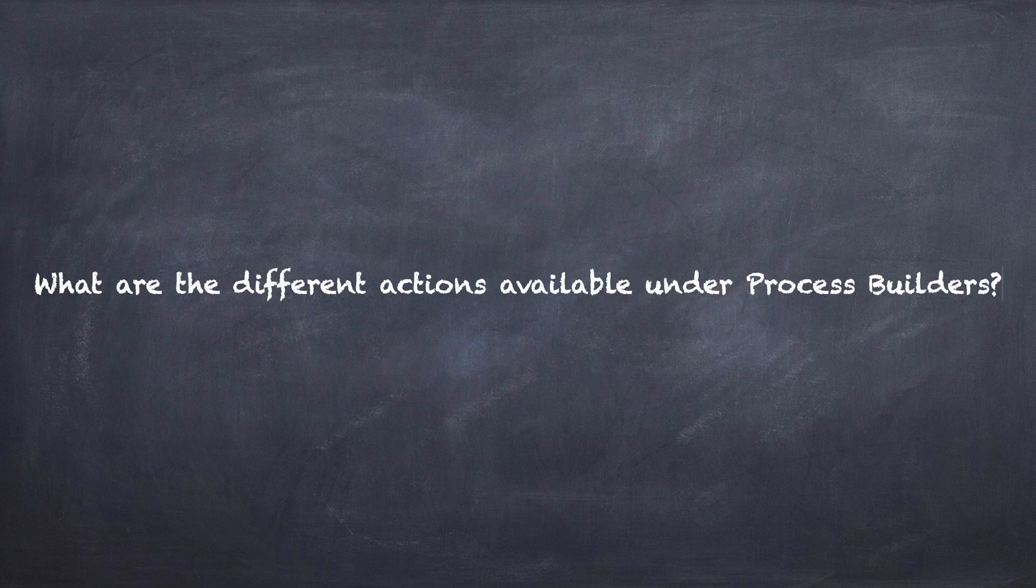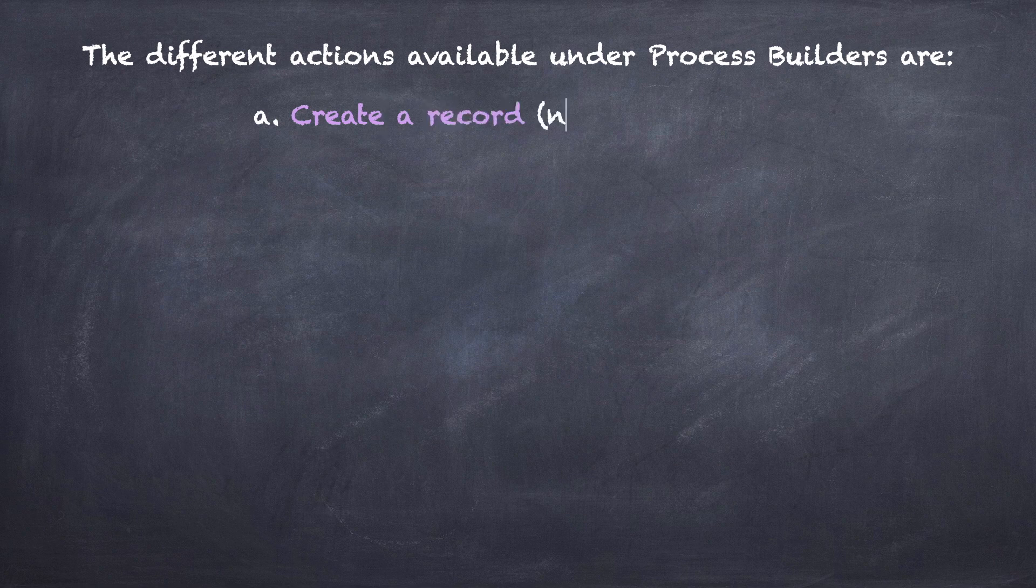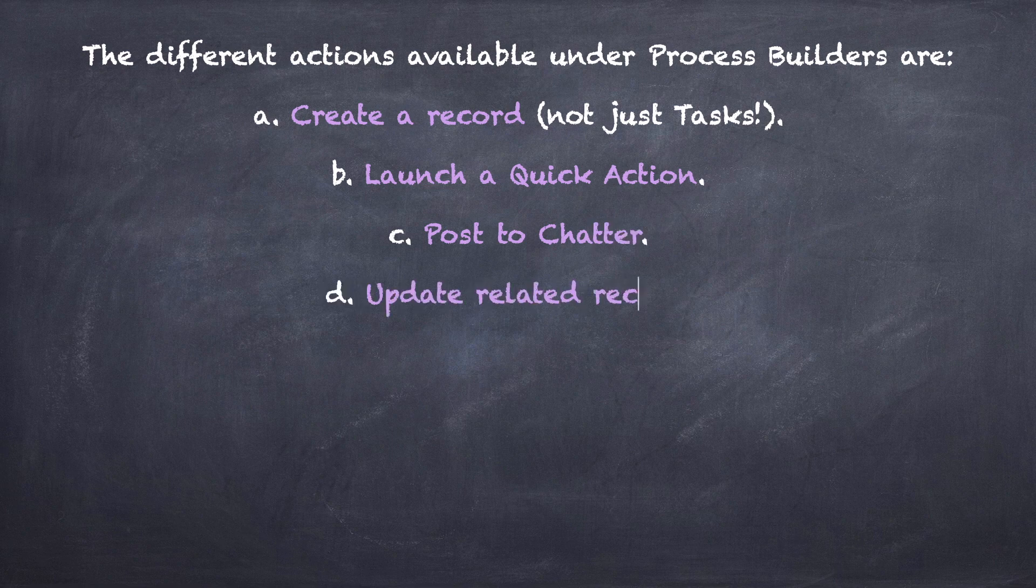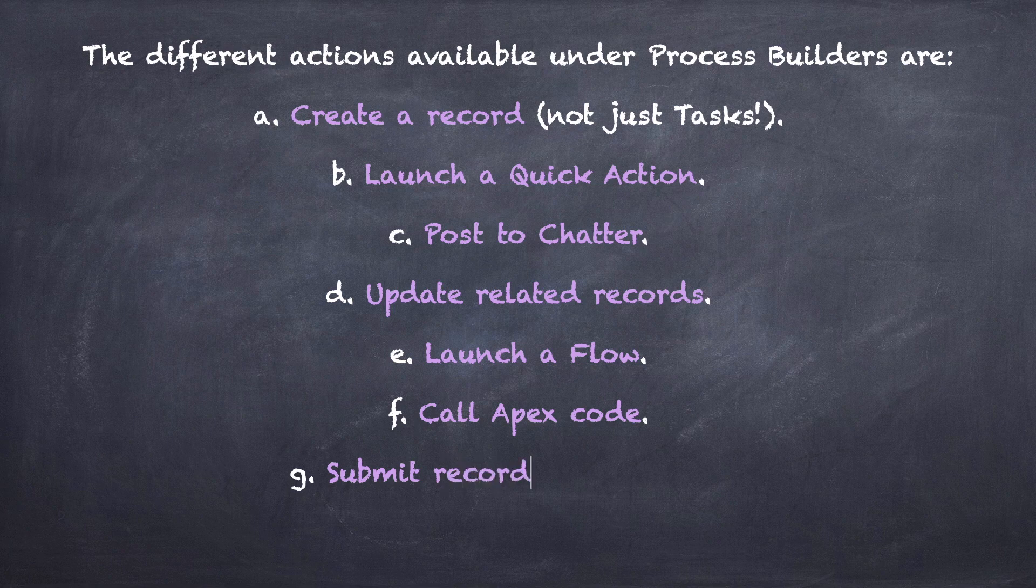What are the different actions available under Process Builders? Well, this is a long list, but let's look at it. So the different actions would be create a record and that creation won't be just tasks, launching quick actions, post to chatter, update related records, launch a flow, call apex code, submit records for approval, invoke another process.